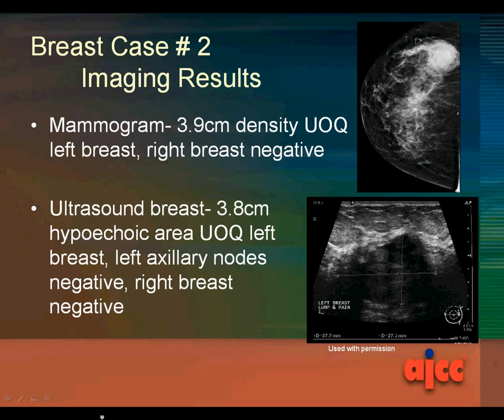For the imaging results, the mammogram shows a 3.9-centimeter density in the upper outer quadrant of the left breast; the right breast is negative. The ultrasound showed a 3.8-centimeter hypoechoic area in the upper outer quadrant of the left breast, and the left axillary nodes were negative, and the right breast was negative.